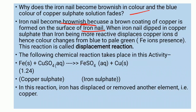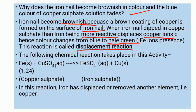When the iron nail is dipped in copper sulphate, iron, being more reactive, displaces copper ions. Hence the color changes from blue to pale green. Pale green is the color of Fe²⁺ ions. This reaction is called a displacement reaction. The chemical equation is: Fe + CuSO₄ → FeSO₄ + Cu.